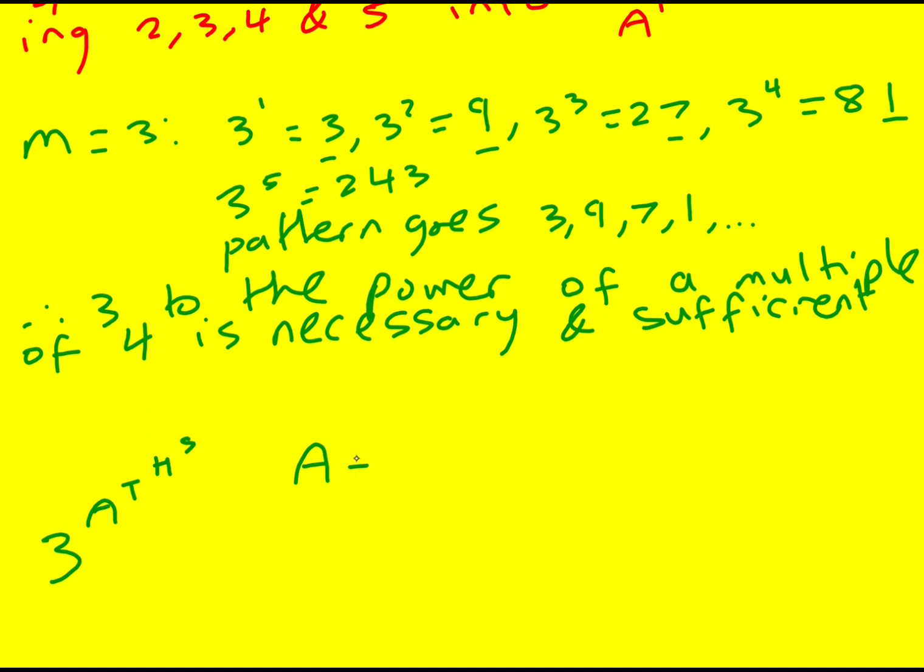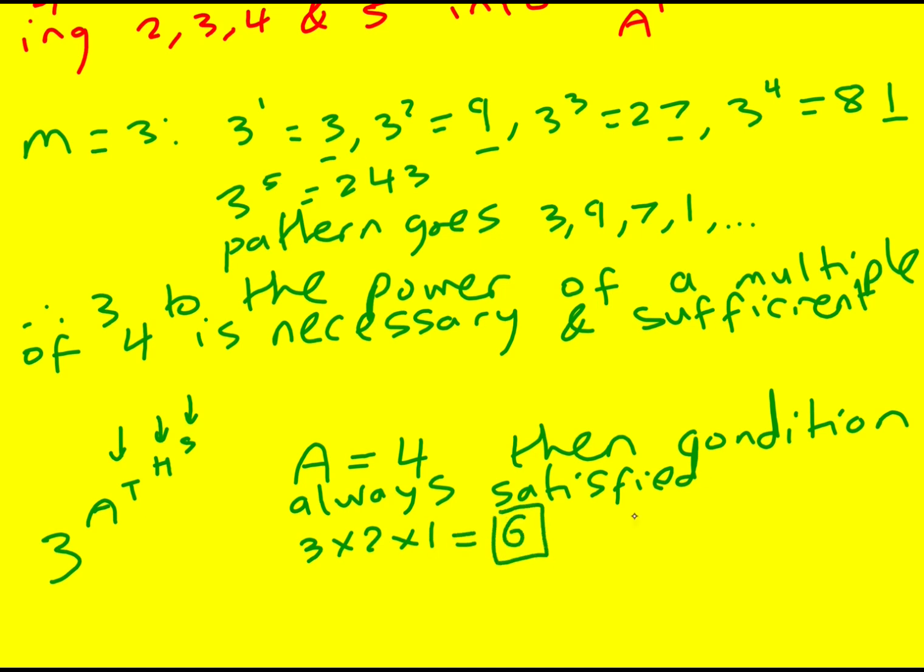Now, if A is equal to 4, then the result will always be true. Then condition always satisfied, because we're going to get 3 to the 4 to the something, but we're definitely going to get 3 to the power of 4. So there are then 3 ways of picking T, 2 ways of picking H, 1 way of picking S. 3 times 2 times 1 equals another 6 ways.